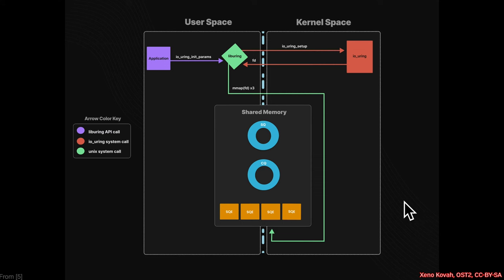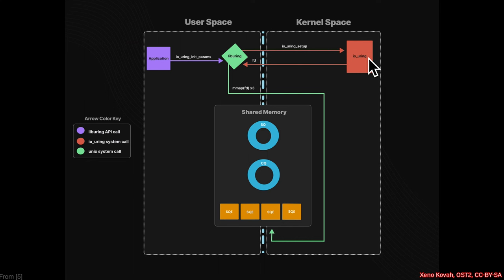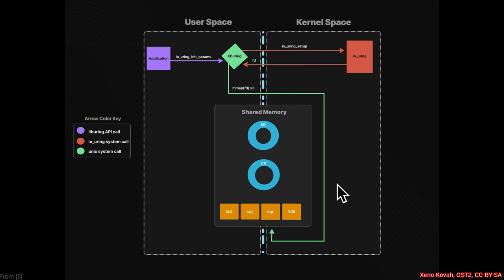To visualize what's going on — there was another attack paper with nice graphics you can look at later — user space queues up information into shared memory that the kernel also utilizes. The setup involves allocating space for the submission queue, the completion queue, and the submission queue entries. Kernel space sends back a file descriptor, and user space uses mmap to allocate space for these.